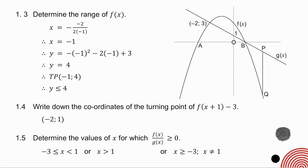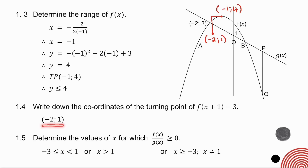Question 1.4 asks you to write down the coordinates of the turning point of f of x plus 1 minus 3. That moves my graph one unit to the left and three units down. My turning point was (-1, 4). Going 1 to the left gives minus 2, and 3 down gives 1. So my turning point becomes (-2, 1).